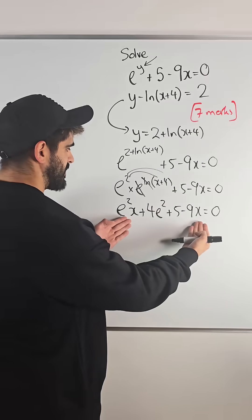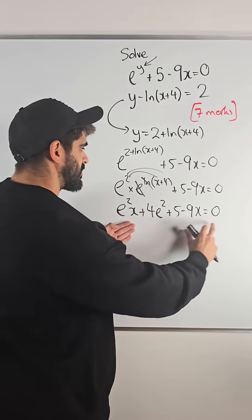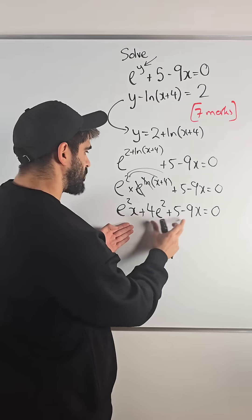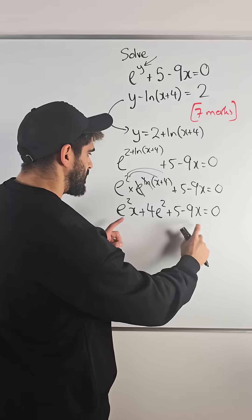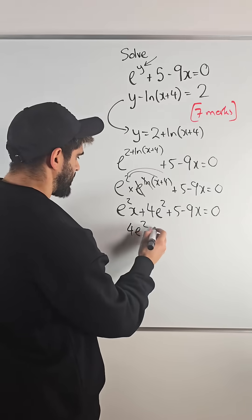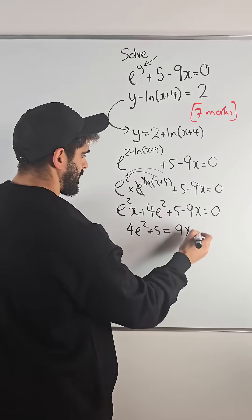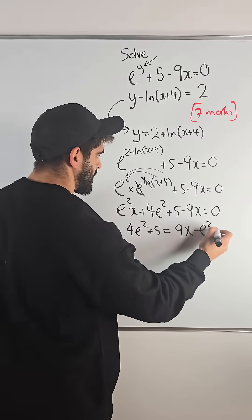Now we're going to rearrange for x. Now you can see that they're on the same side, right? So you could factorize out x and then these two can go to the other side. But I don't like that because these two on the other side will become negative. So these two I'm actually going to take to the other side. So I get 4e squared plus 5 is 9x here on the other side and then minus e squared x.